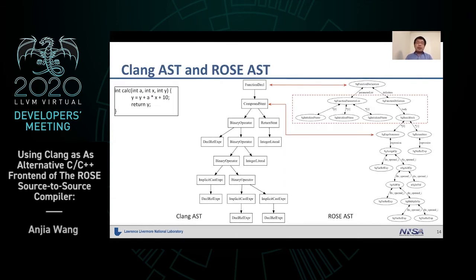This is an example for Clang AST and Rose AST. We can see they both have function declaration and statement declaration. But in Rose, we have more nodes for more information, and we are allowed to change the node and move the node around the tree.